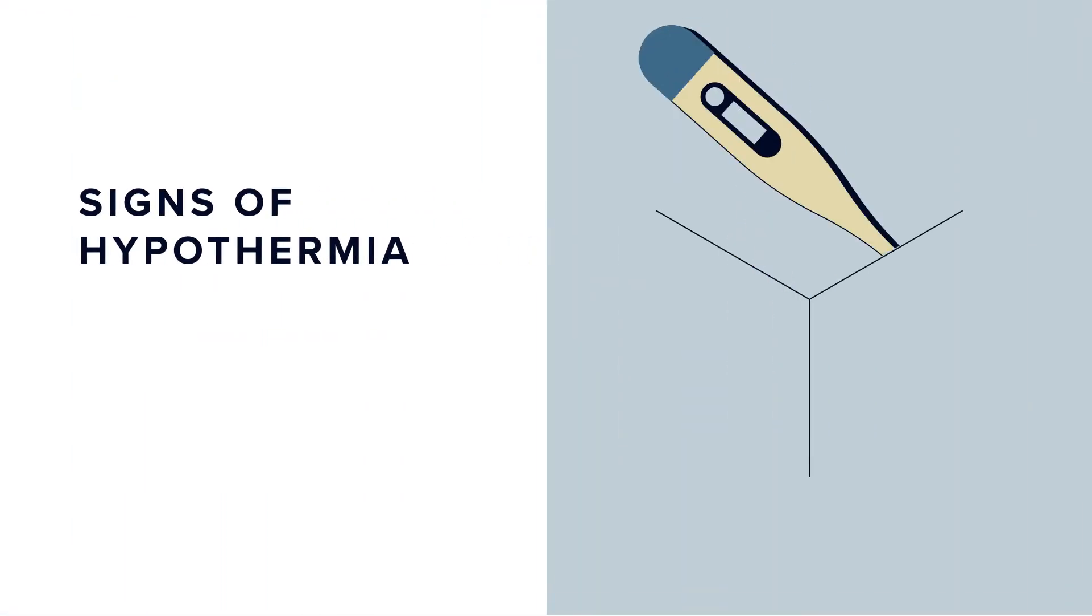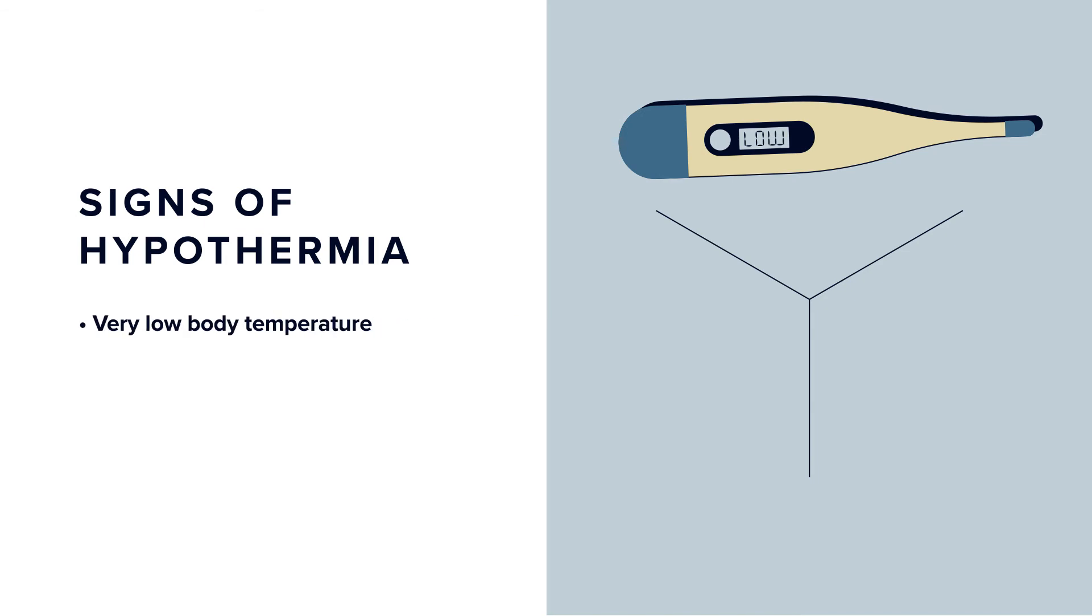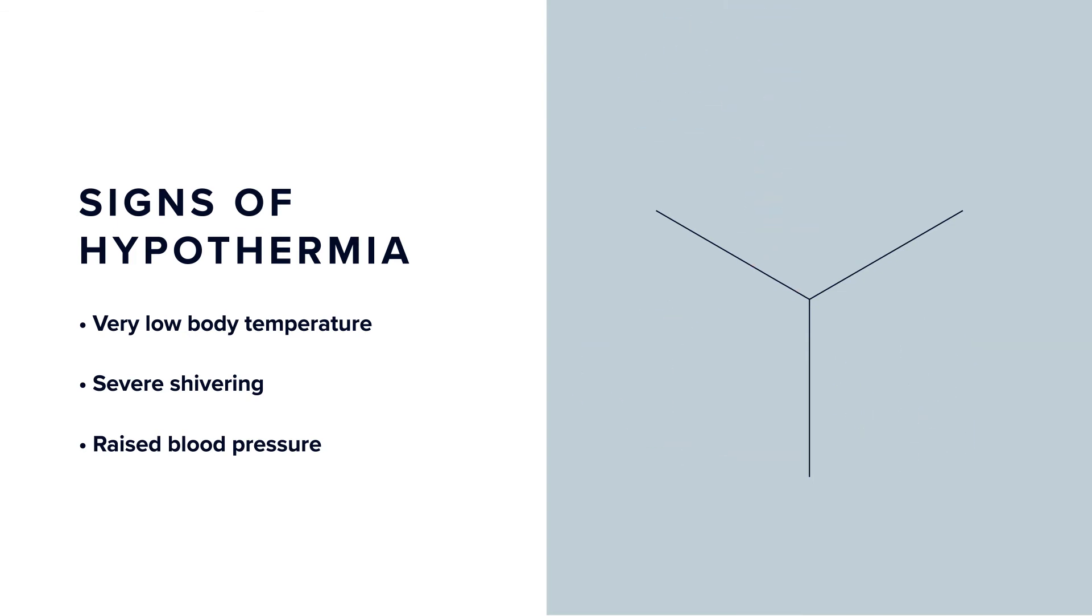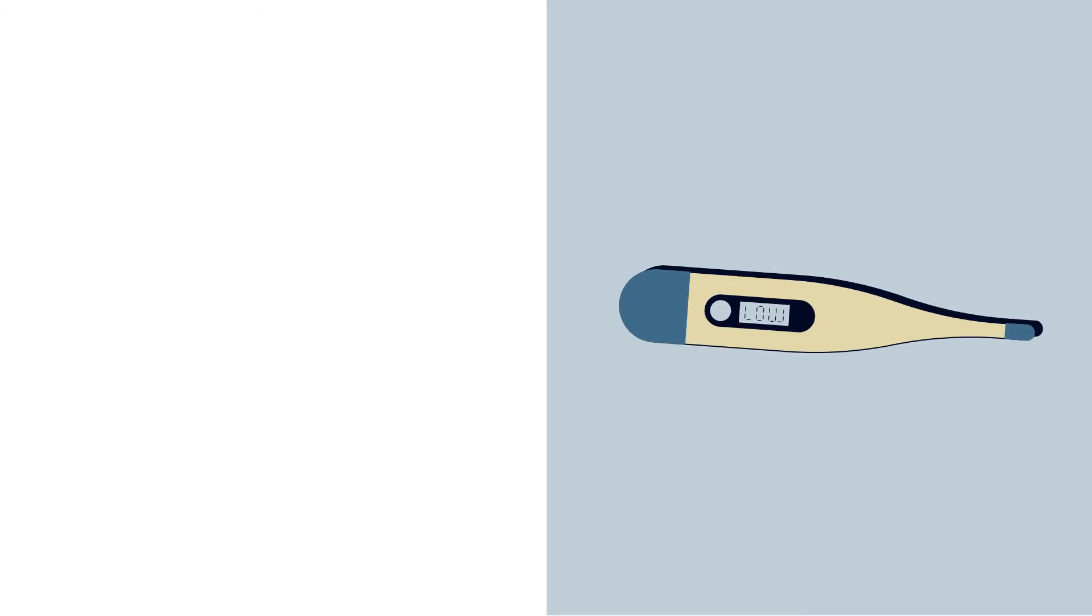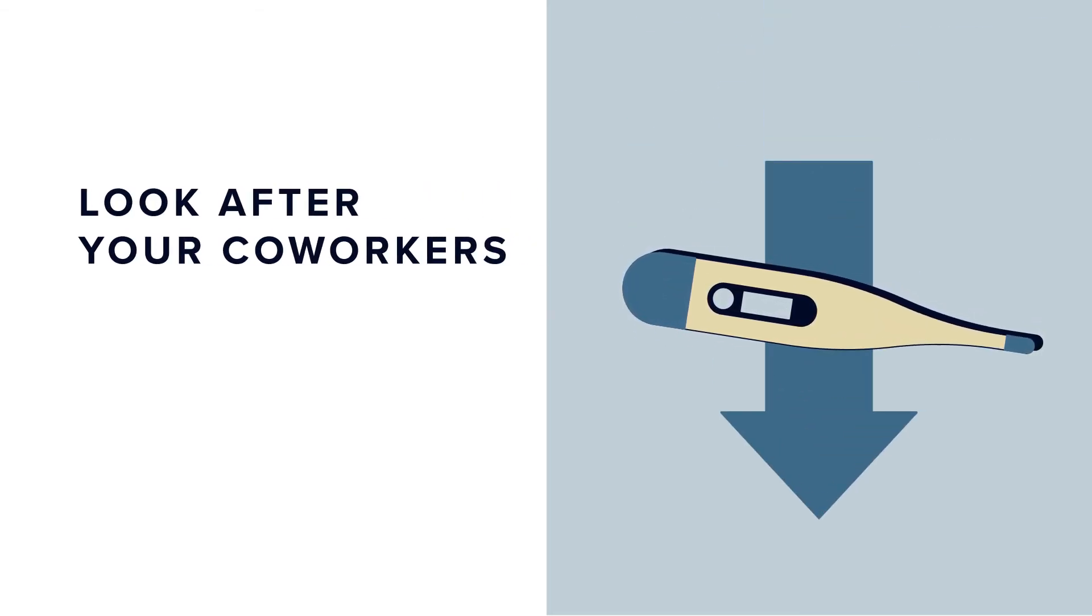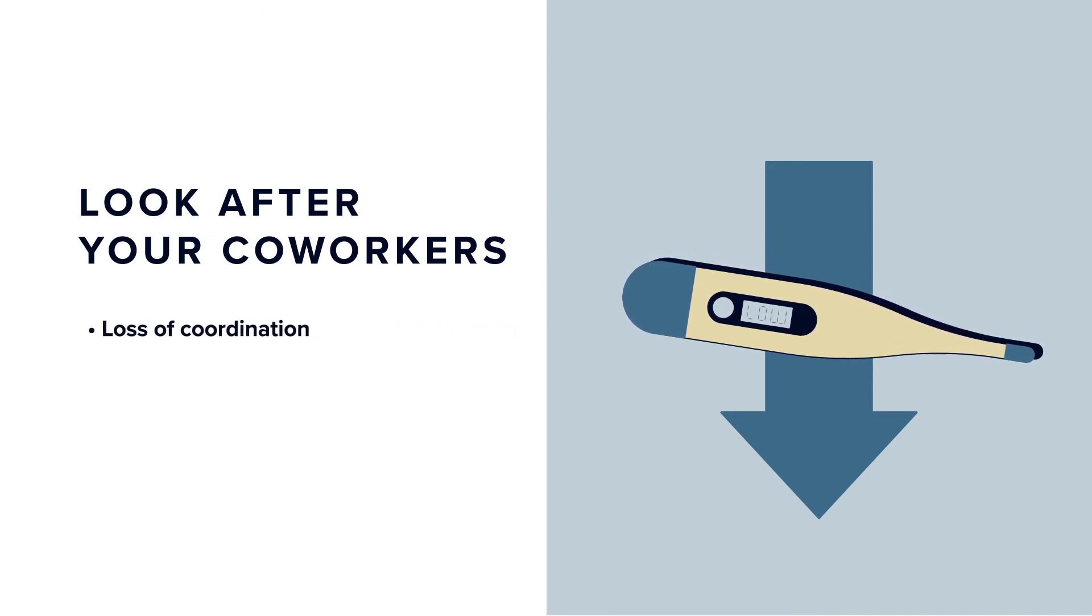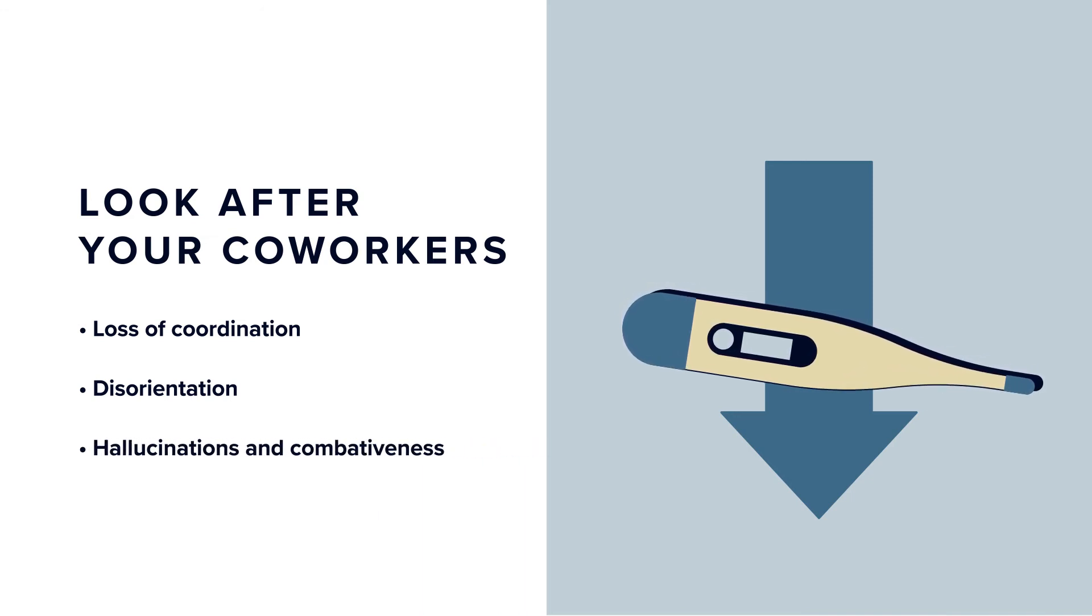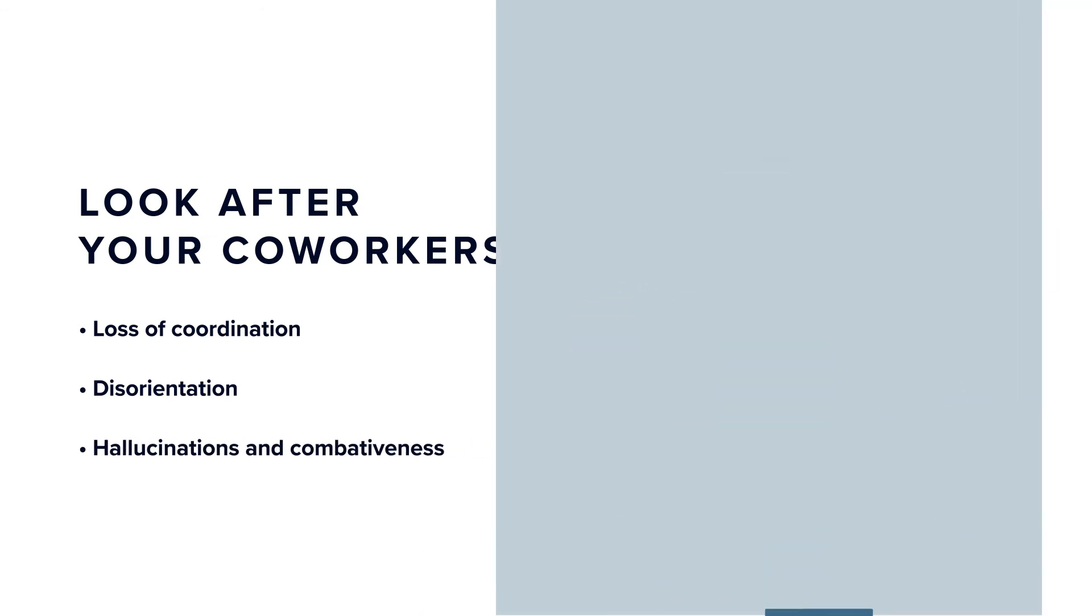Hypothermia occurs when the body temperature drops to dangerous levels. Be aware of early signs, such as severe shivering or raised blood pressure, so you can go to the job site's designated warming area to increase your body temperature immediately. As body temperature continues to drop, it becomes more difficult to diagnose ourselves. Watch out for co-workers who seem to lose coordination and become disoriented, as these are signs of moderate to severe hypothermia. They may hallucinate or become combative, so be prepared for a co-worker to deny needing help.